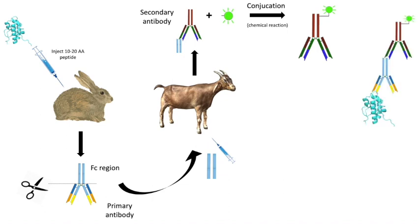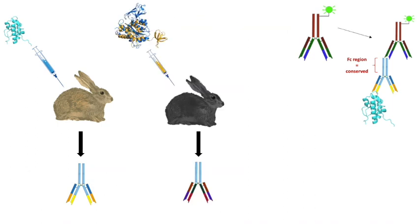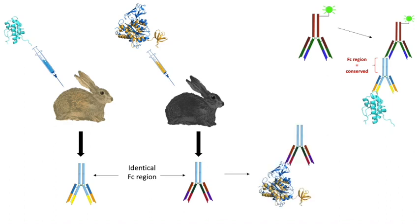So we have the tools to detect our protein of interest. The cool thing about this indirect detection method is that we can reuse our secondary antibody and do not have to design it over and over again for each experiment. This has to do with the high level of conservation in the Fc region of antibodies. When we inject another protein in another rabbit, that rabbit will again produce antibodies against our protein of interest, and while it specifically targets our new protein, the Fc region remains the same. Therefore we can reuse the secondary antibody from our previous experiment to detect and localize our new protein.